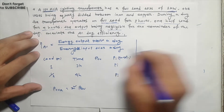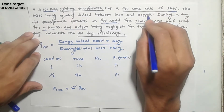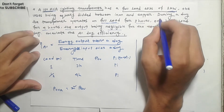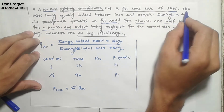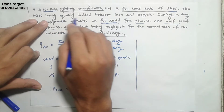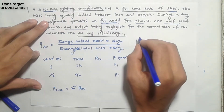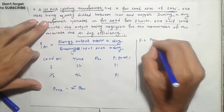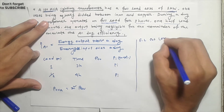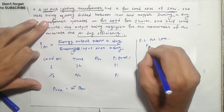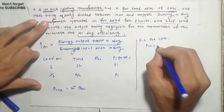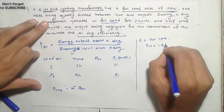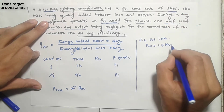Now, full load copper loss: the total loss is 3kW, and the loss is equally divided. So we see full load copper loss PCU equals 1.5 kilowatts.